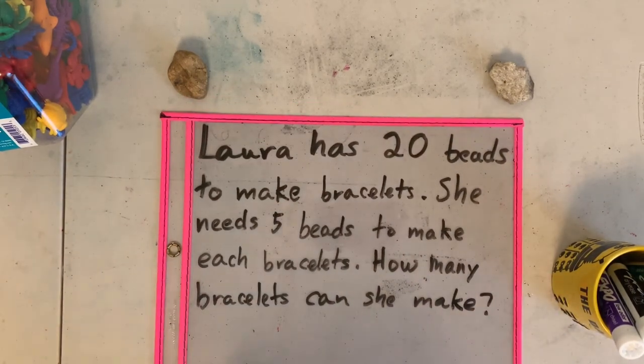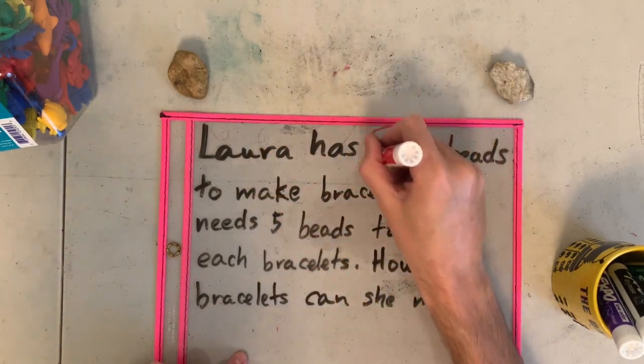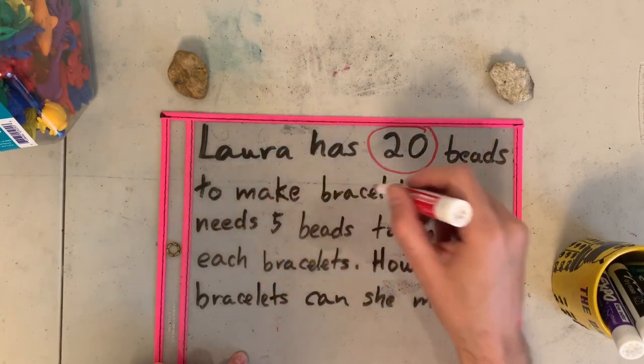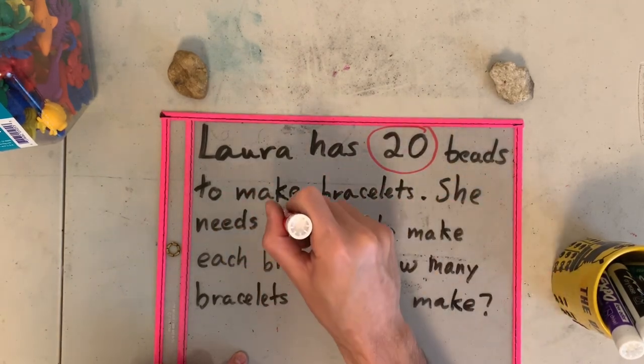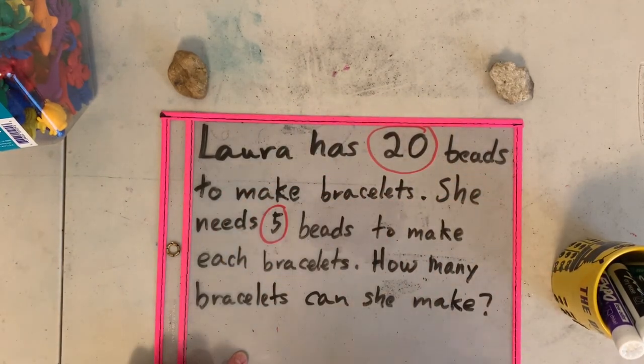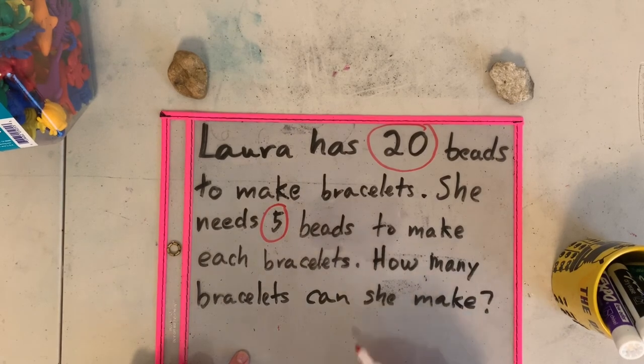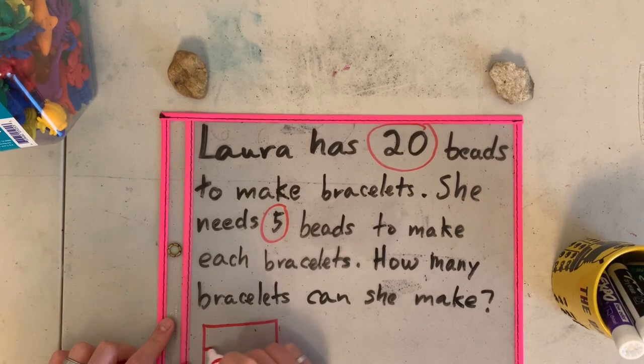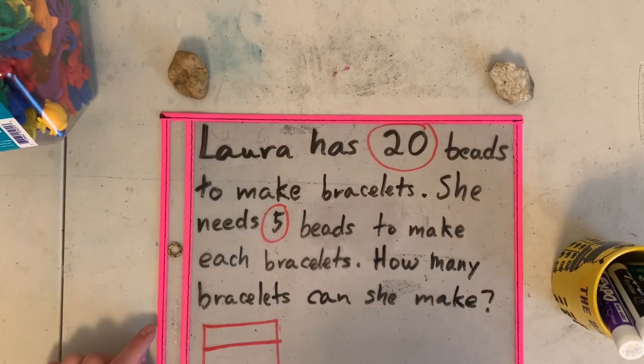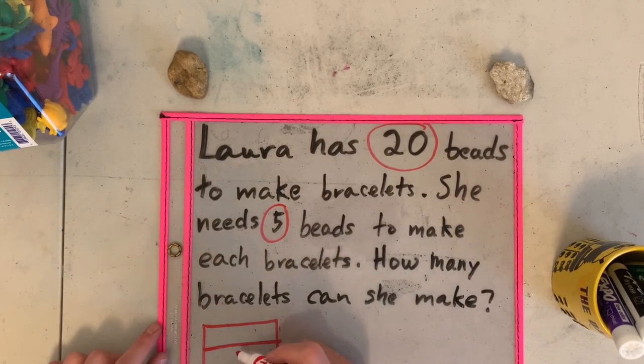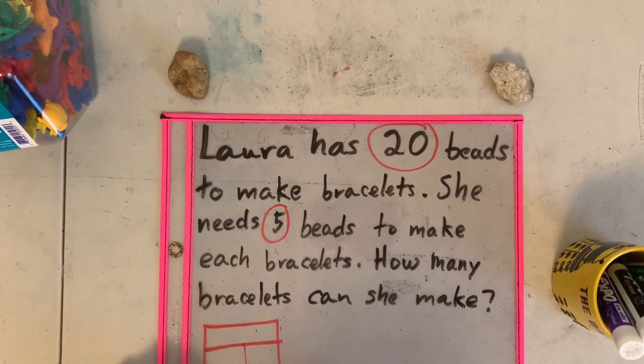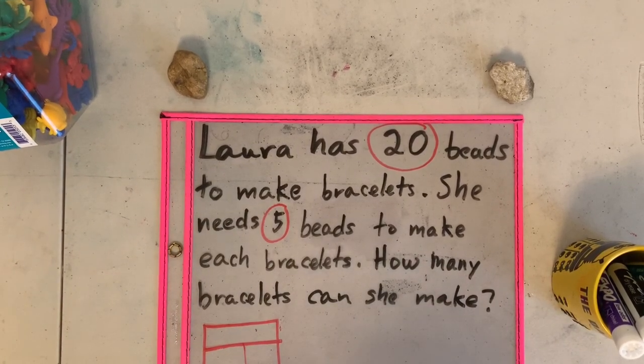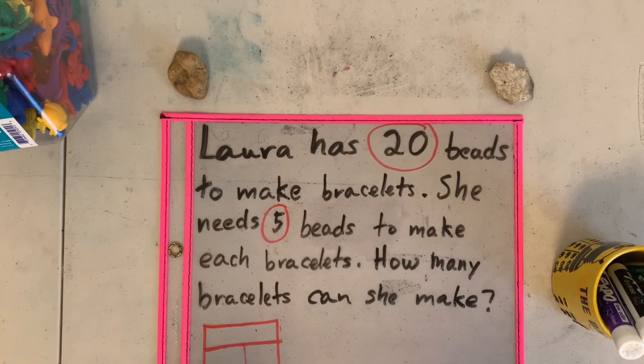You're going to do the same thing with this number I have here. Laura has 20 beads to make bracelets. She needs five beads to make each bracelet. How many bracelets can she make? Remember to do the part-part-whole, okay? And remember to divide into this amount of parts. This will be all for today. Please do your best. Enjoy, and I will see you next time.